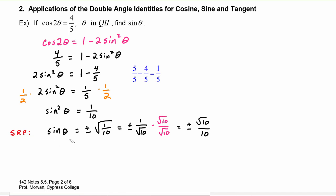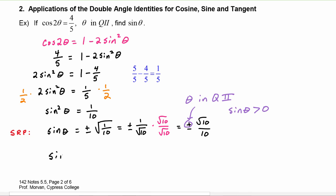Now we have to decide whether this will be positive radical ten over ten or negative radical ten over ten, and what decides that is the quadrant that theta lives in. We know that theta is in quadrant two. Because theta is in quadrant two, we know that sine of theta has to be positive. So finally, sine of theta is positive radical ten over ten.